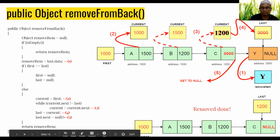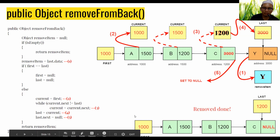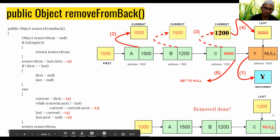Finally, we set last.next to null, which unlinks the previous last node. After this removal, last points to C as the last node, and C's next address is now null.